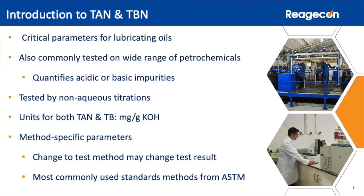TAN and TBN are crucial parameters in lubricating oil and are also measured in a wide range of other petrochemicals. The measurement is a quantification of the acidic or basic impurities, tested by a non-aqueous titration, and the units used to express both TAN and TBN are milligrams per gram of potassium hydroxide.